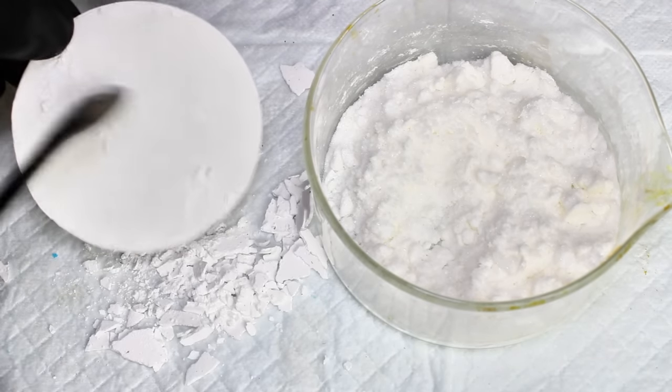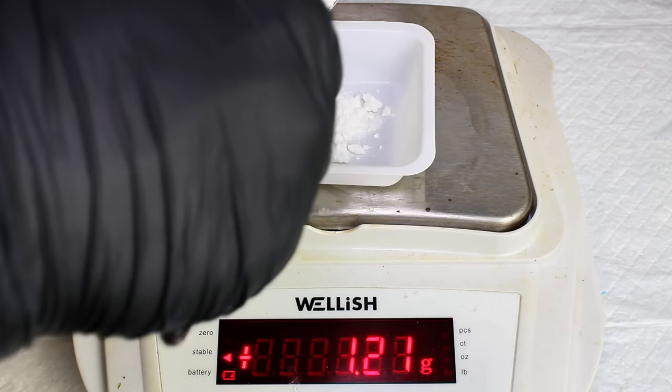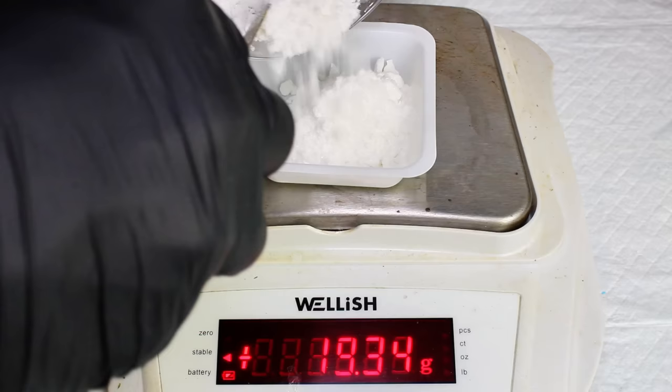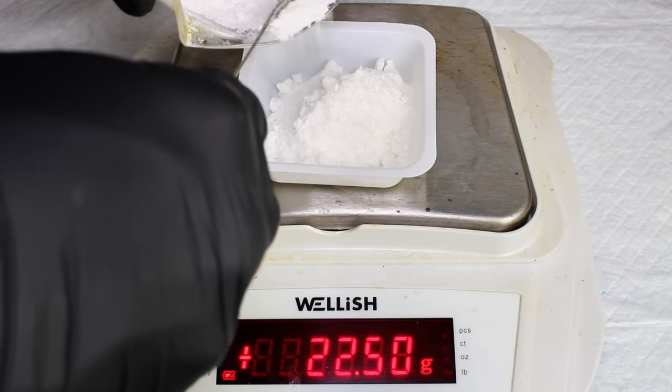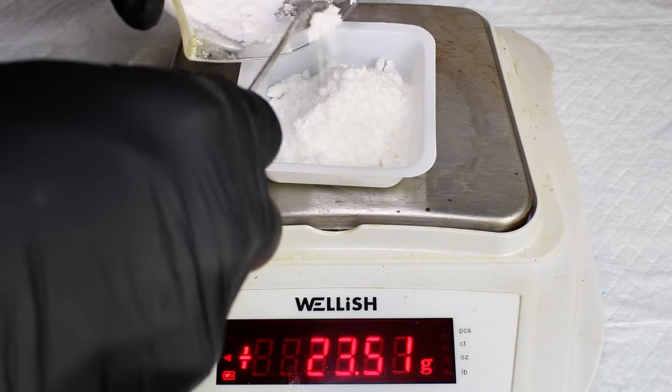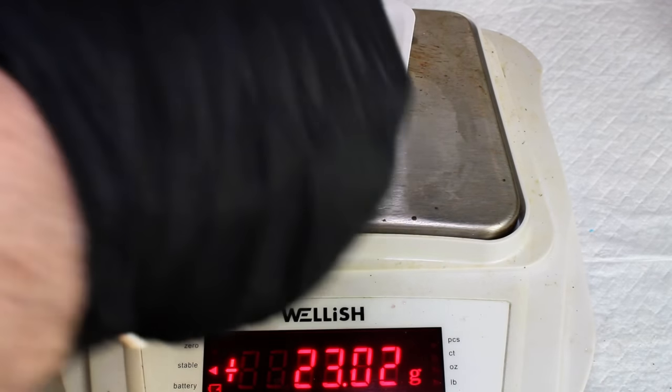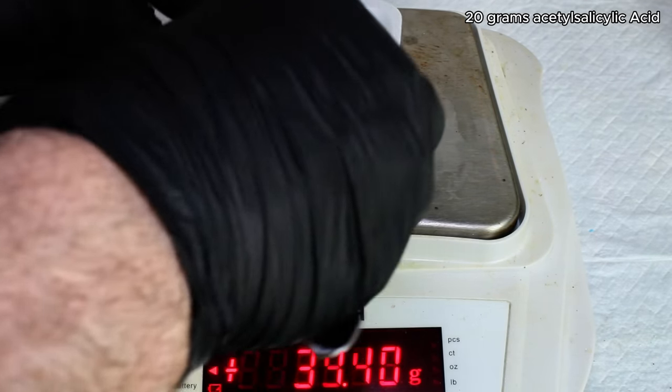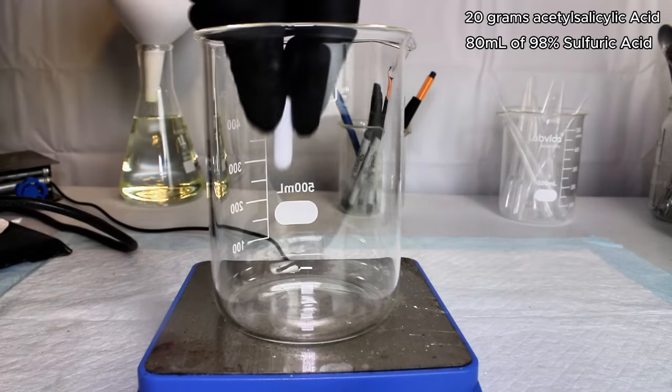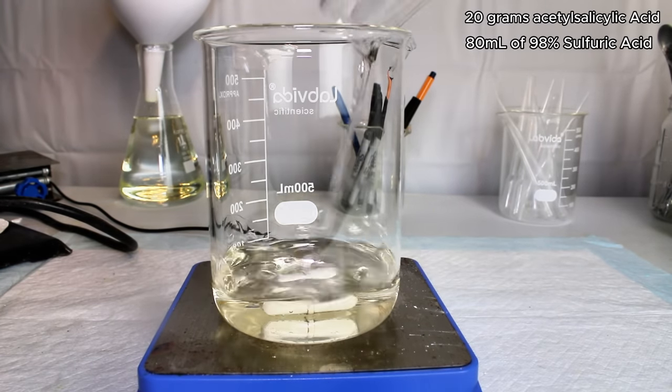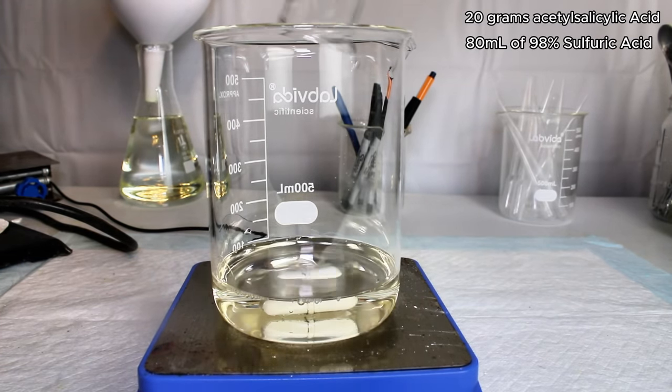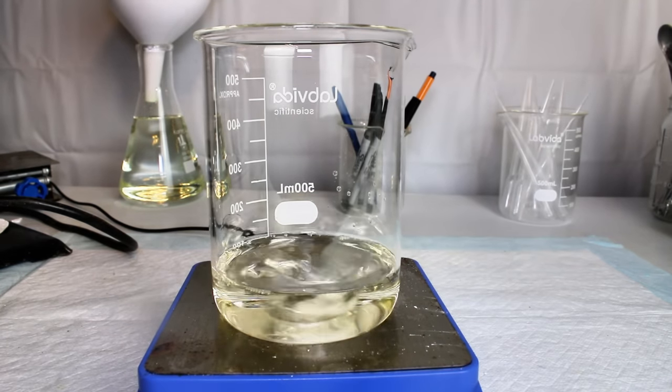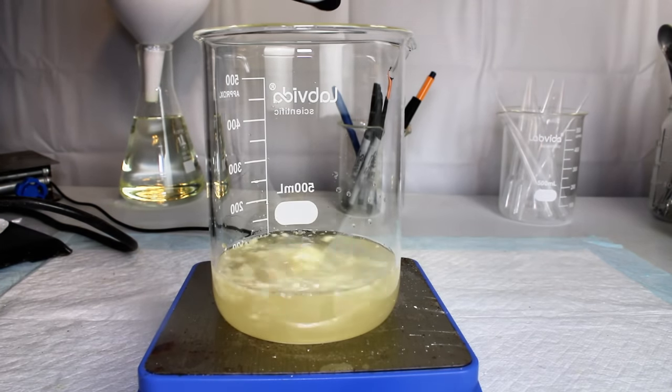I went ahead and weighed out 24 grams of my acetylsalicylic acid before deciding I didn't really want to make quite that much picric acid, and cut it down to 20 grams. I then poured 80 milliliters of concentrated sulfuric acid into a beaker and slowly added my acetylsalicylic acid under constant stirring. This dissolved some of it, and the solution darkened a bit.